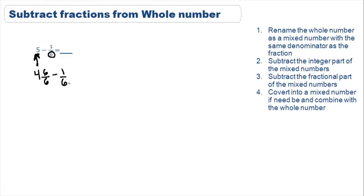Step 3, subtract the fractional parts of the mixed numbers. You'll see we have 6/6 minus 1/6. We'll keep the denominator the same and we'll subtract the numerators. 6 minus 1 is equal to 5.